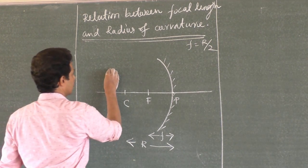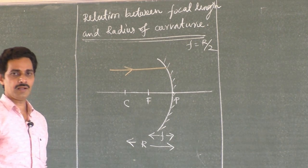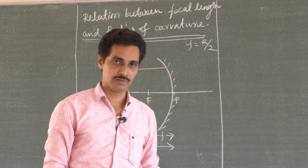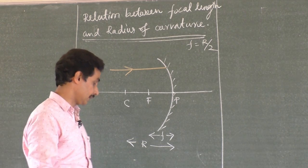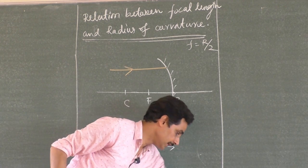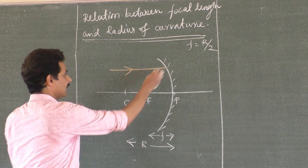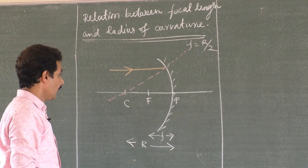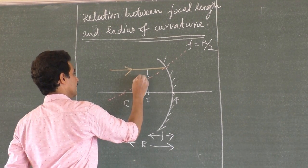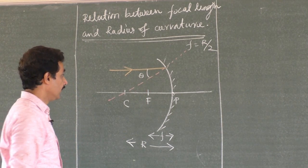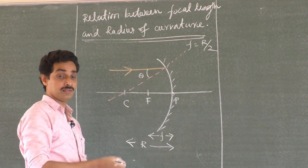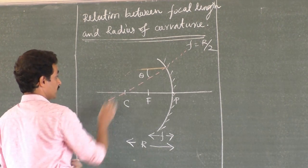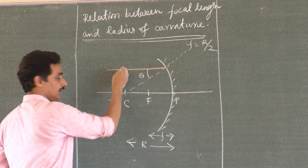Take one ray of light parallel to the principal axis. For any ray incident on a reflecting surface, the angle of incidence is measured from the normal. To get the normal at a point on the mirror, simply connect the center to that point. So this normal is drawn as a dotted line. The angle between the normal and the incident ray, theta, is the angle of incidence.